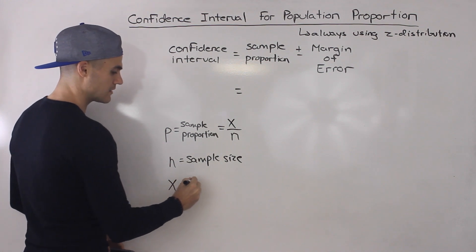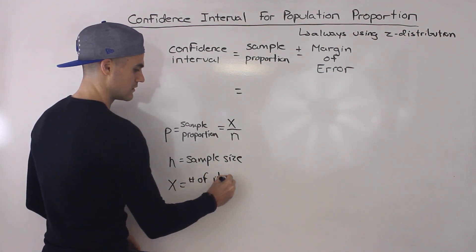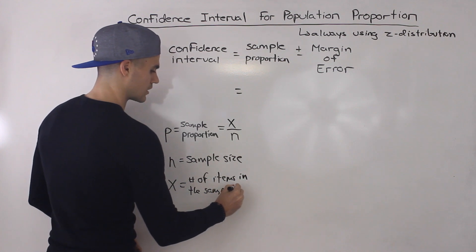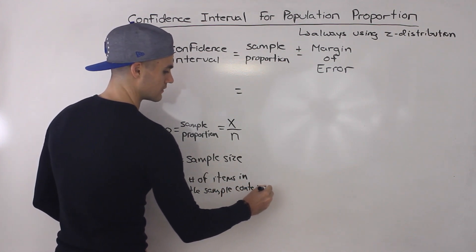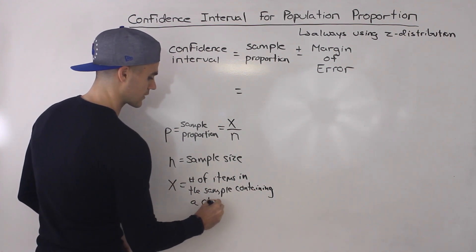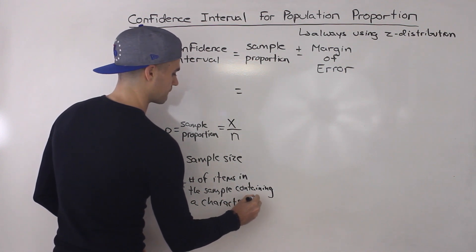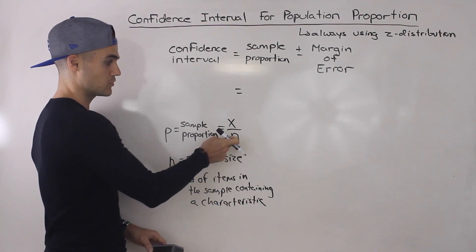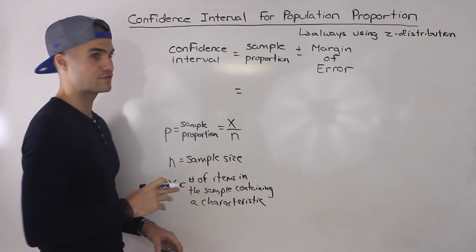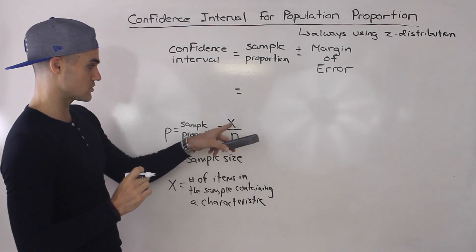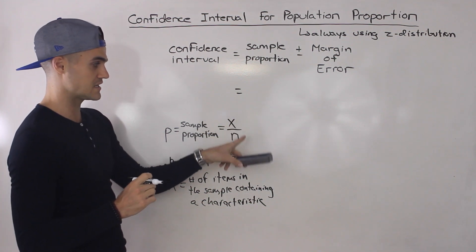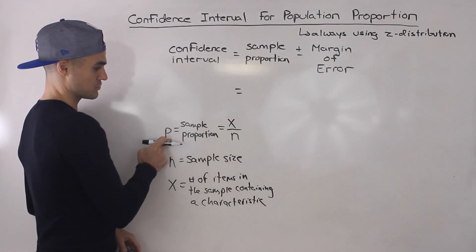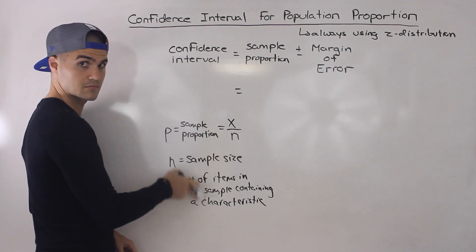And x is the number of items in the sample containing a certain characteristic. For example, you might look at a factory and take a sample of 1,000 items — so n equals 1,000. If you notice that 50 of the items contain an error, then the sample proportion p equals 50 over 1,000, which is 5% or 0.05. So p is equal to x over n, where x and n are those parameters.